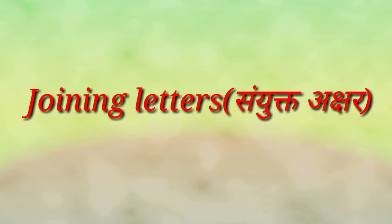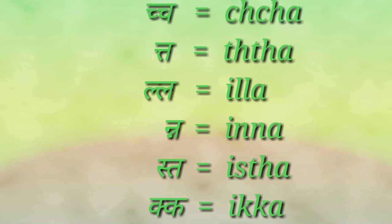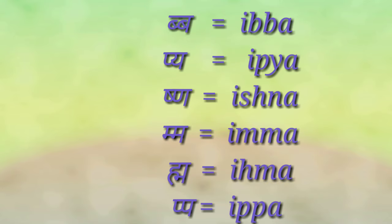Now we will learn some joining letters — Sanyukta Akshar: Ikcha, Itta, Illa, Inna, Ista, Ikha, Ibba, Ippya, Ishna, Himma, Ihma.